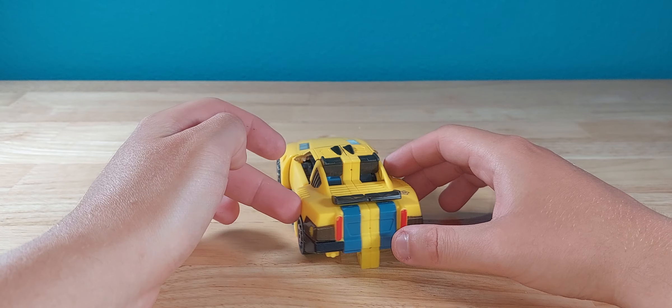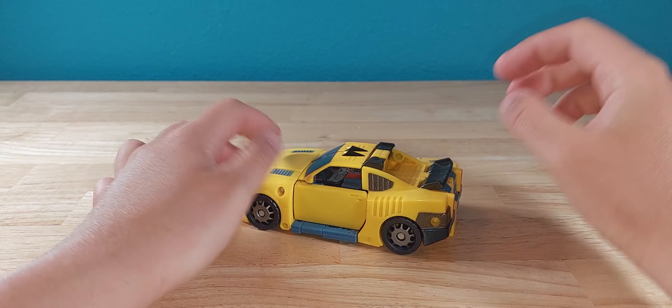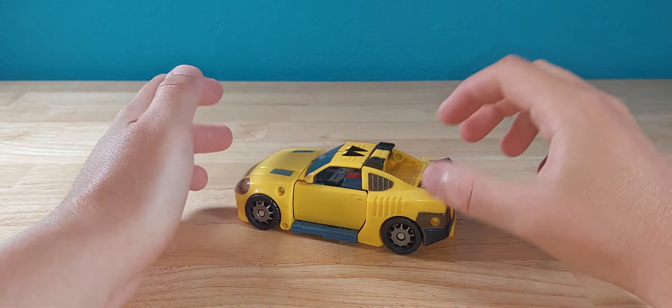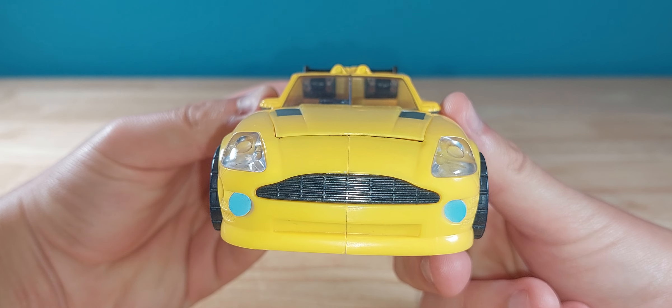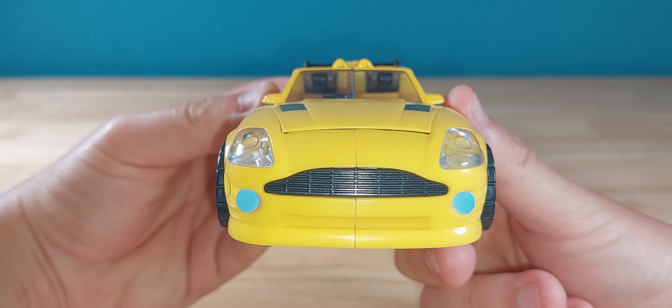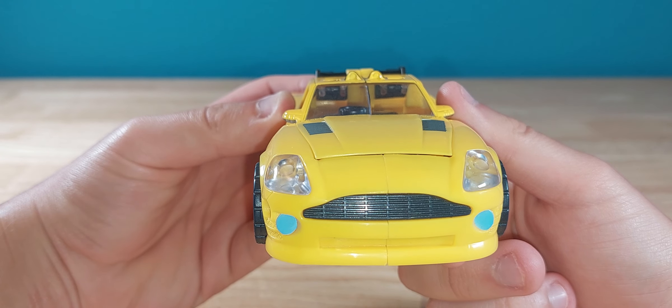This figure really isn't too bad in alt mode, honestly I like it. The robot mode is really where it suffers. But get a little bit of close up on that detail. It looks like a frowny face, and I don't think you can unsee it now.